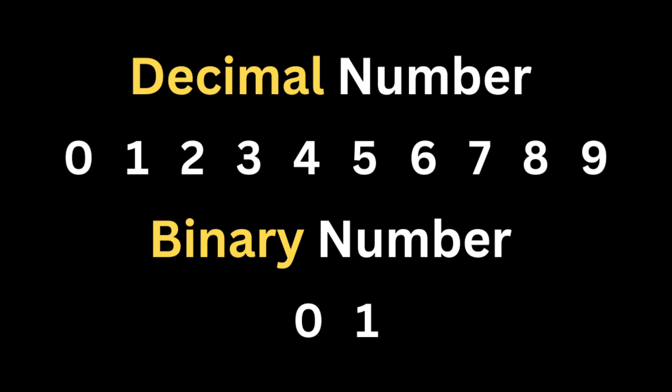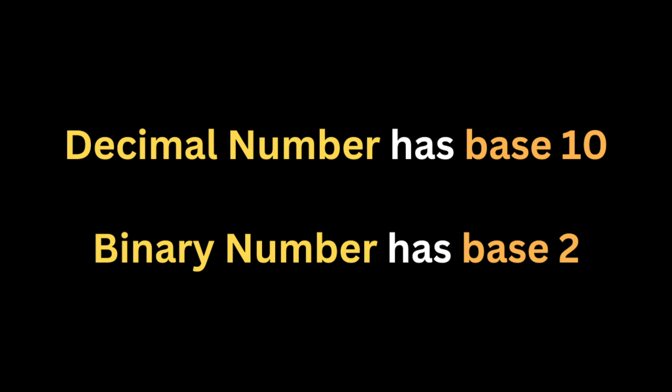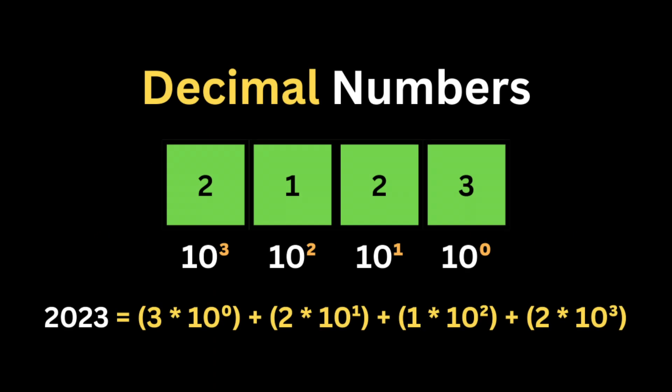As we know, decimal numbers use digits from zero to nine, while binary numbers are represented only by zeros and ones. A decimal number has base 10 and a binary number has base 2. In a decimal-to-binary conversion the base changes from 10 to 2. Let's start by understanding how decimal numbers are represented and how they work.